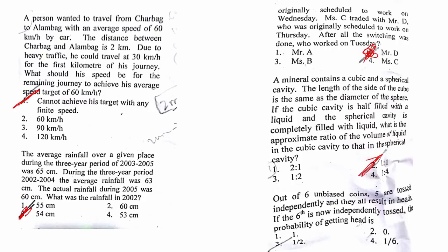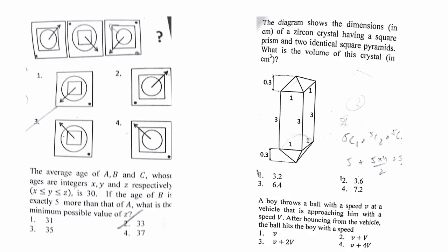A mineral contains cubic and spherical—the answer is 1 is to 2. Out of 6 unbiased coins, 5 are tossed independently—the answer is 1 by 2. For this pattern question, the answer is option number 3. Average age of A, B, C—the answer is minimum age of Z is 33. The diagram of zircon—for this the answer is 3.2. For this velocity question, again I'm not very sure about this. So these two questions I'm not sure; rest of the questions I've already discussed.